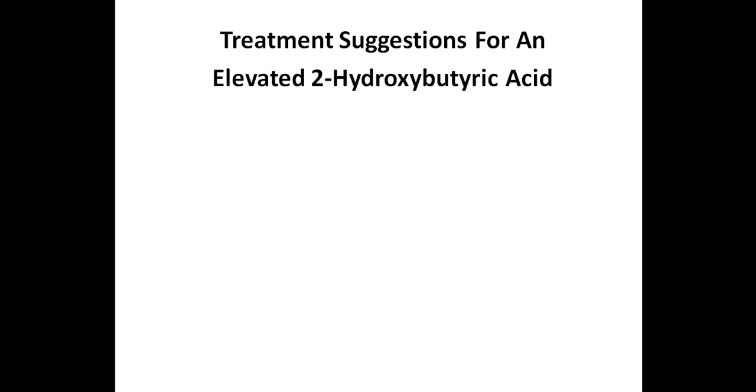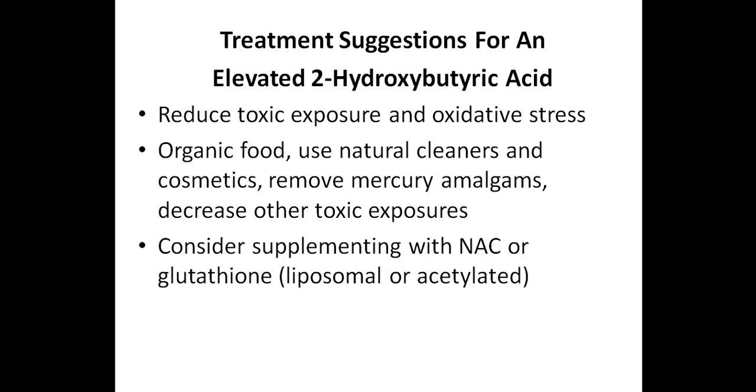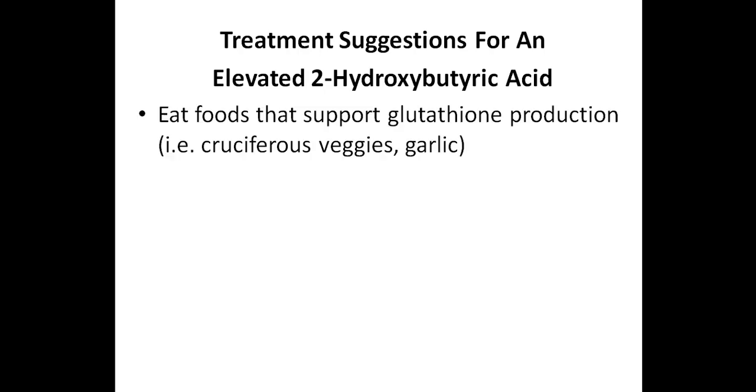Treatment suggestions for an elevated 2-hydroxybutyric acid. So there'll be some overlap with an elevated pyroglutamic acid, as once again you want to reduce toxic exposure and oxidative stress. Again, eat organic food, natural cleaners and cosmetics. Remove mercury amalgams. Decrease other toxic exposures. Consider supplementing with NAC or liposomal or acetylated glutathione supplements. Selenium.